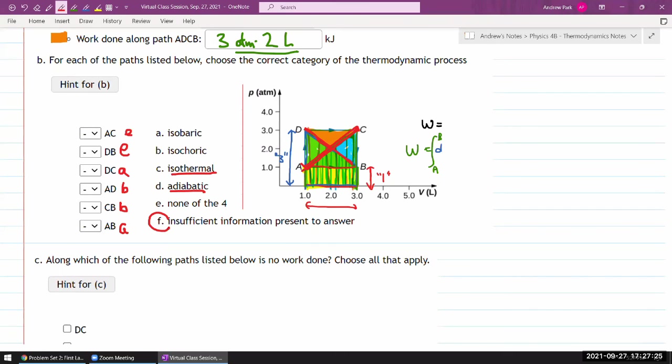Because for you to say there's an insufficient information, I guess that would be where if you have some curved path and you don't have enough information to say that it's either isothermal or adiabatic. Then you would have to say, we don't know if it's, it could be isothermal or adiabatic, but there is enough specification in the question to figure that out.